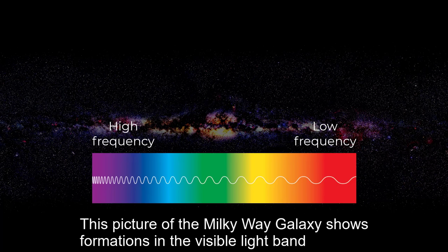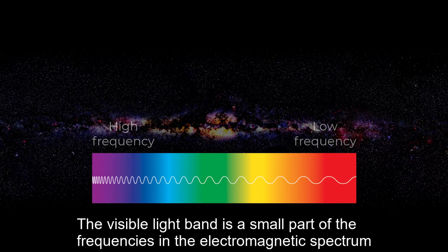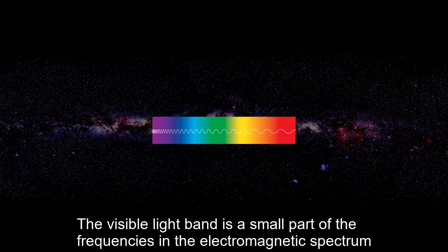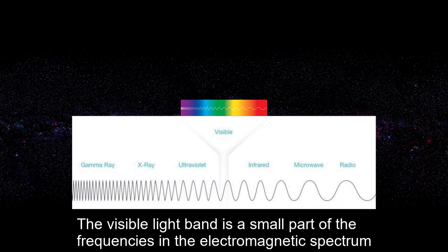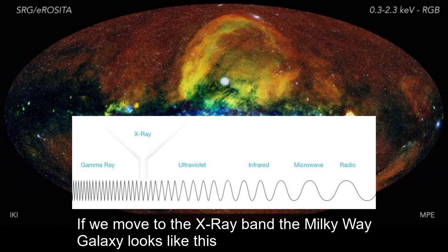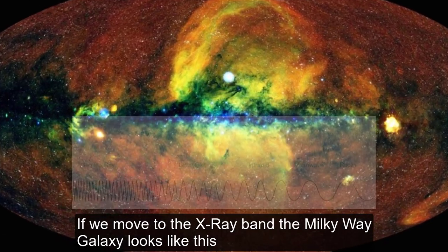This picture of the Milky Way galaxy shows formations in the visible light band. The visible light band is a small part of the frequencies of the electromagnetic spectrum. If we move to the X-ray band, the Milky Way galaxy looks like this.